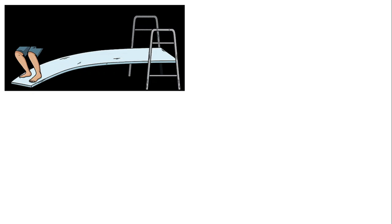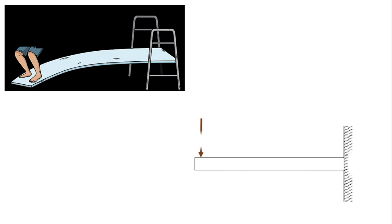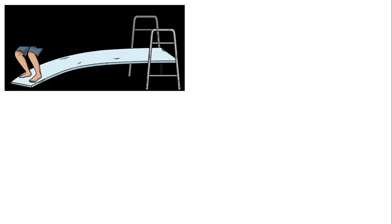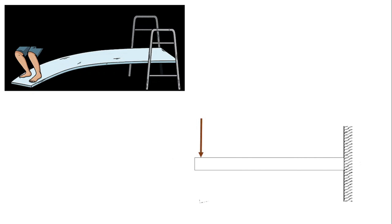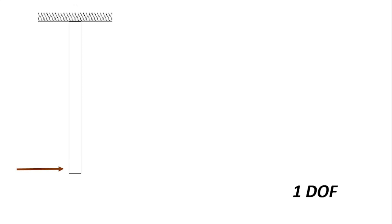There are several other kinds of one degree of freedom vibrating systems. We have the transverse vibration of a beam — consider the case of a diving board with a man standing on it, depressing it and jumping from it, such that the beam undergoes transverse vibration. We model it showing the displacement, and the system moves up and down undergoing transverse vibration. At every point in time we can describe the displacement of the beam by an angle theta.